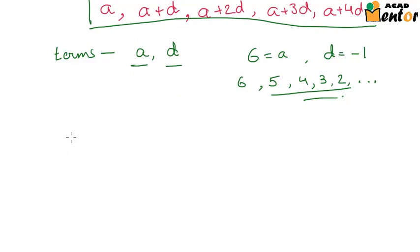Now there are two types of APs. One is the finite AP and the second one is the infinite AP. Now the finite one has finite number of terms and the infinite one goes on forever. It does not have a finite number of terms.